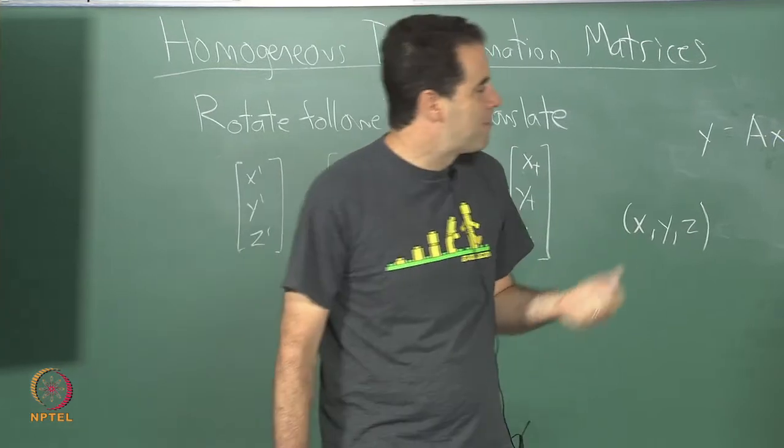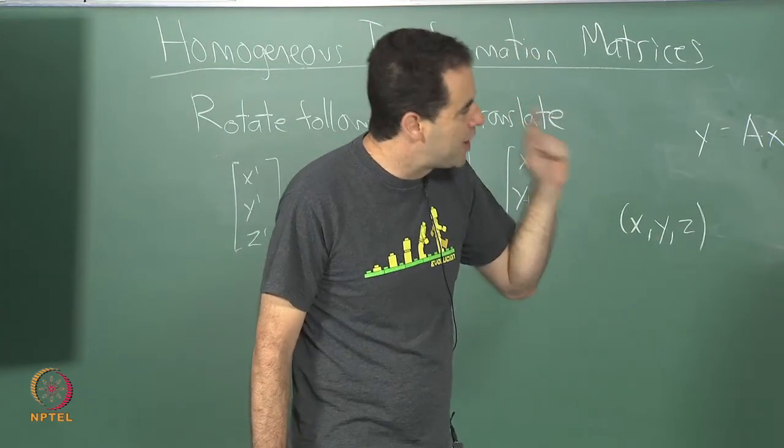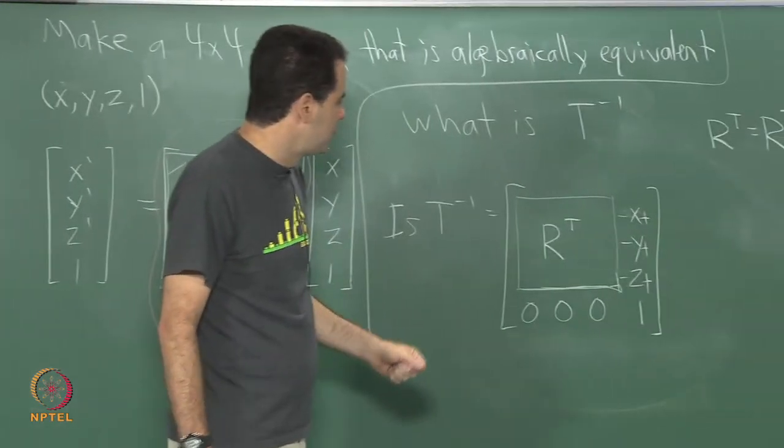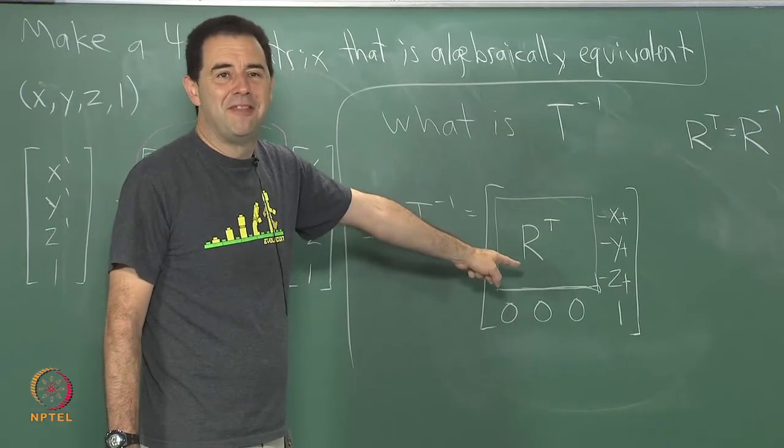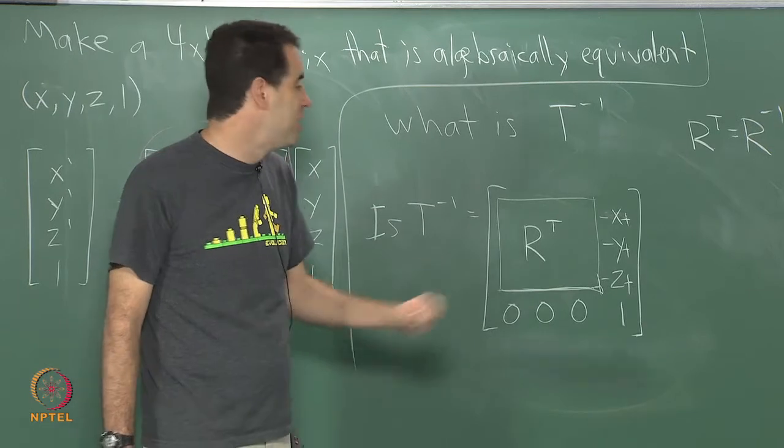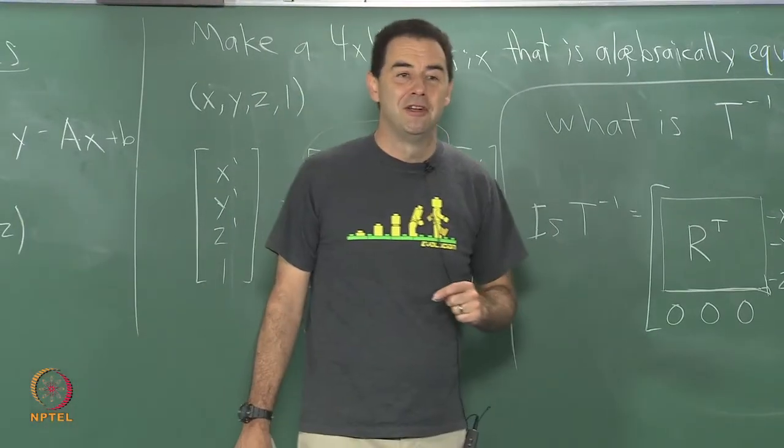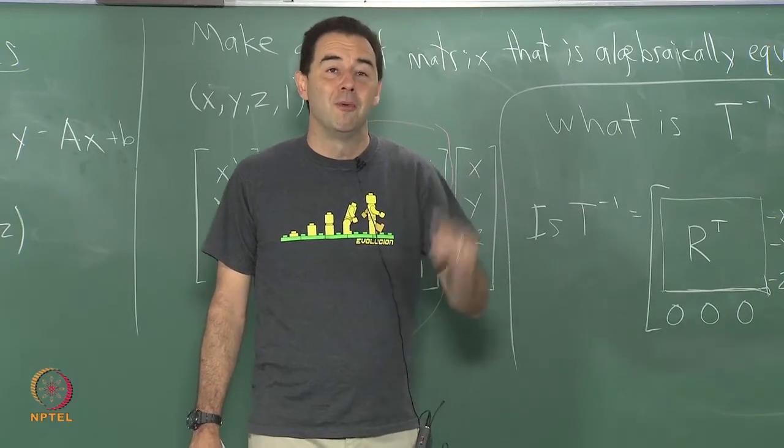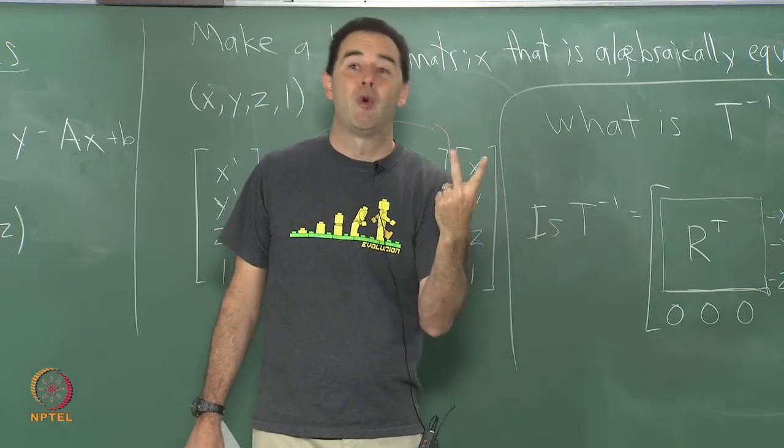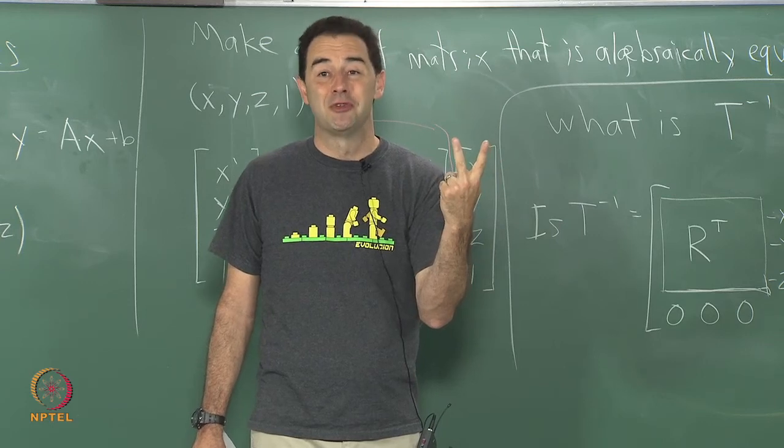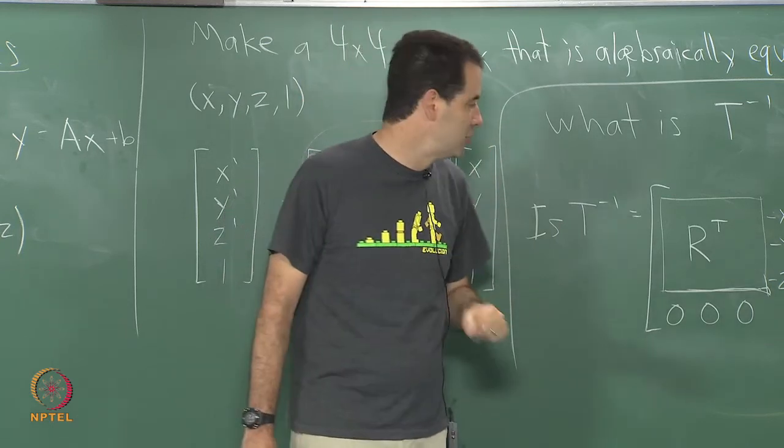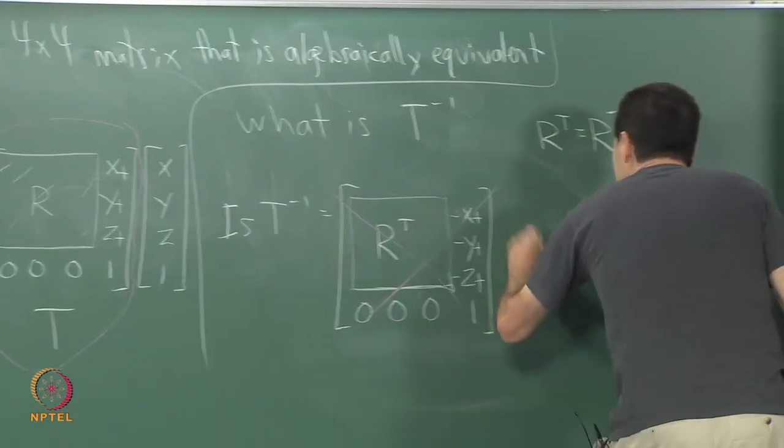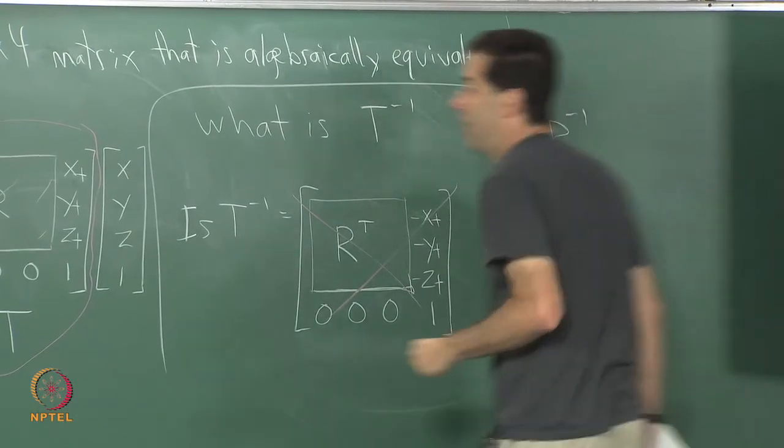Okay, very good, very good. The operations are in the wrong order here. If you apply this matrix, it is going to first unrotate and then untranslate, right? Or first inverse rotate, if you like, and then inverse translate. That seems fine, except for that point that I made a little bit earlier. When you have non-commutative algebra, you have to swap the order of operations when you take an inverse, right? You have to invert the order of operations. This is not going to work. So the answer is no for that.